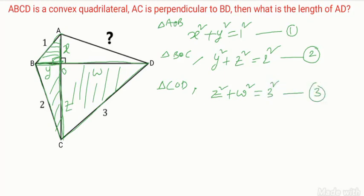Now we want to find AD. AD is the hypotenuse of triangle AOD. So in triangle AOD, AD square is equal to X square plus W square. So AD I want, AD is equal to square root of X square plus W square. This is equation 4.